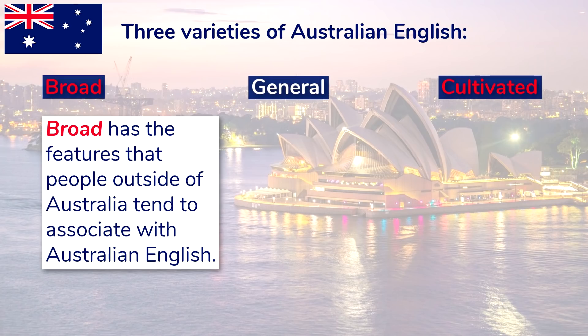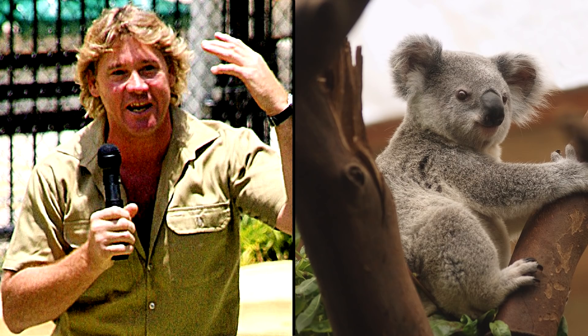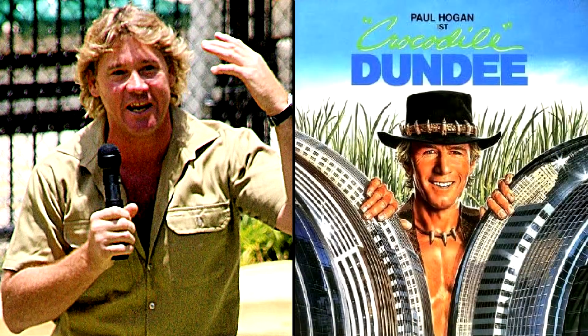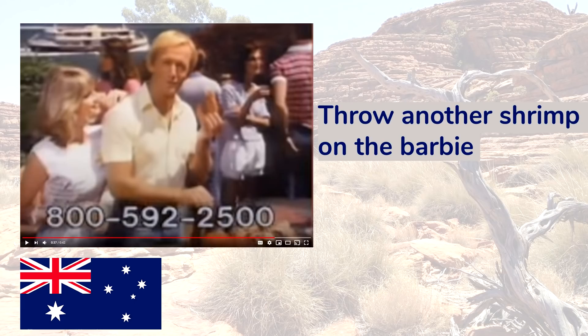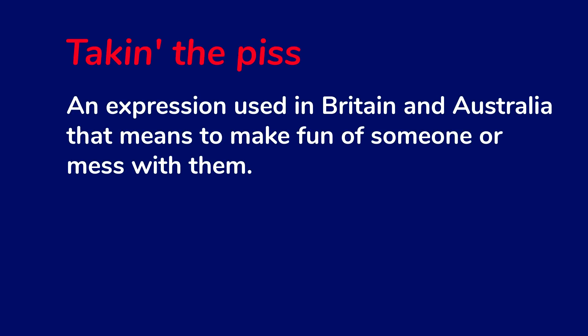Broad Australian English has the features that people outside of Australia tend to associate with Australian English — like Steve Irwin the crocodile hunter, or Paul Hogan in Crocodile Dundee. And just a word of warning: Australians never say 'throw another shrimp on the barbie' unless they're taking the piss out of you. 'Taking the piss' is an expression used in Britain and Australia that means to make fun of someone — it's not used in North American English, though I'm Canadian and sometimes use it from some Aussie friends.